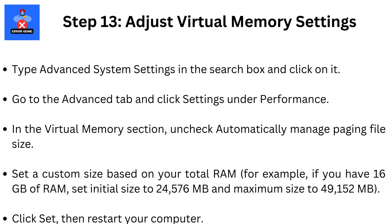Step 13: Adjust virtual memory settings. Increasing your system's virtual memory can help if you're running out of video memory. Type Advanced System Settings in the search box and click on it. Go to the Advanced tab and click Settings under Performance. In the Virtual Memory section, uncheck Automatically manage paging file size and set a custom size based on your total RAM — for example, if you have 16GB of RAM, set the initial size to 24,576MB and maximum size to 49,152MB. Click Set, then restart your computer.